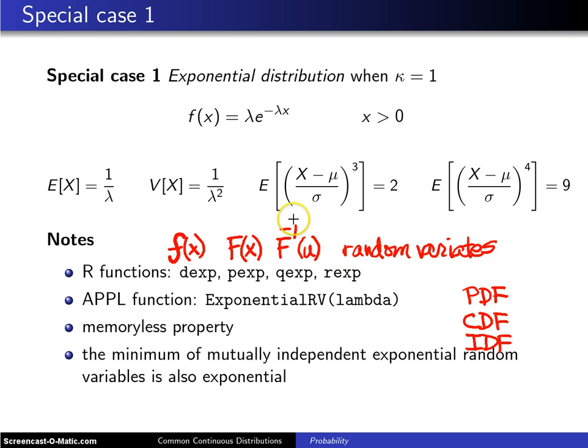The exponential distribution is the only continuous distribution that has the memoryless property, and as alluded to in the truck example, the minimum of mutually independent exponential random variables is also exponential, and that will be something that will be proved in the next chapter. So that's the first special case, which is the exponential distribution.